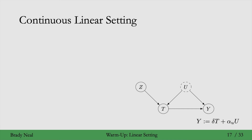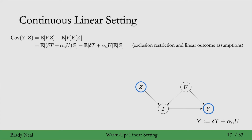We'll now derive the continuous setting formula. Just as in the binary setting, z and y are special: z is the instrument we want to use for identification, and y is the outcome of interest. So something useful to start with is the covariance of y and z. The first step is to apply a basic covariance identity — you can look this up on Wikipedia if this looks unfamiliar. Then we just plug in the structural equation for y, using the linear outcome assumption and the exclusion restriction assumption, same as in the binary setting. Then if we distribute terms and apply linearity of expectation, we get the next expression.